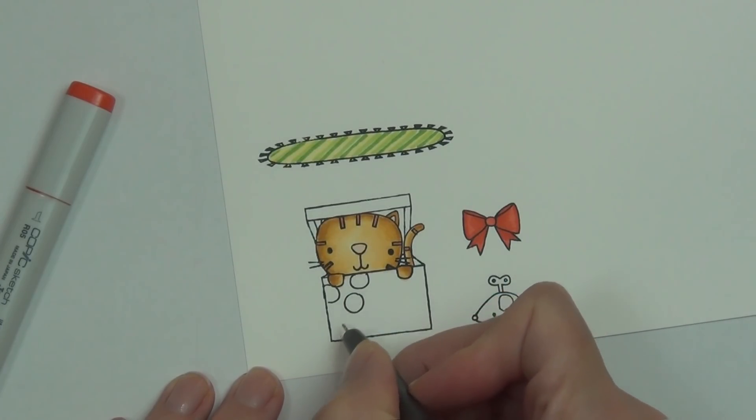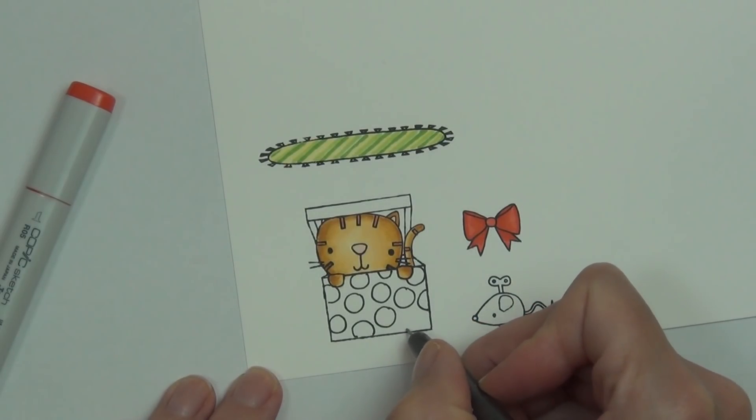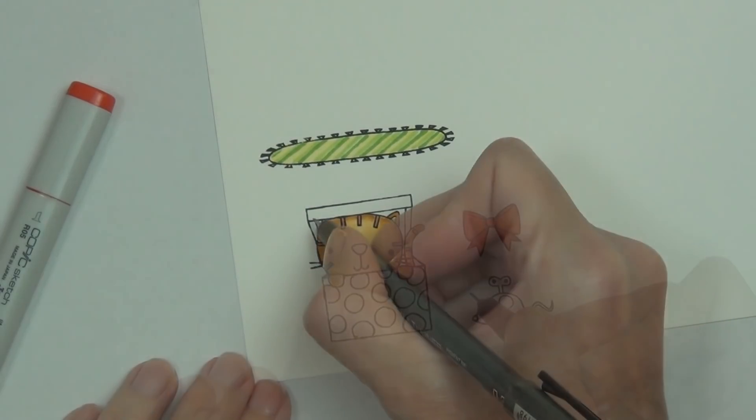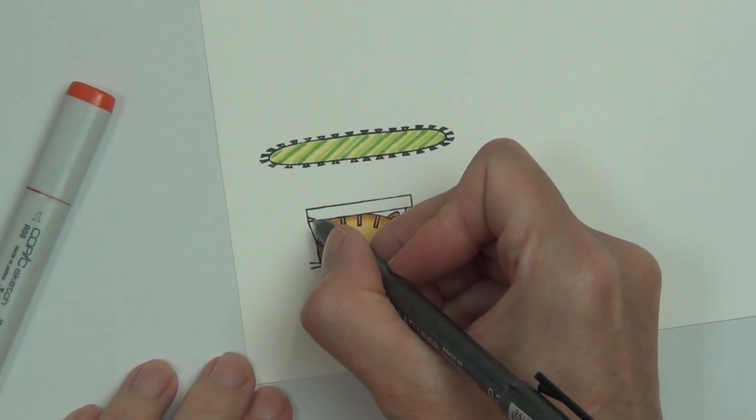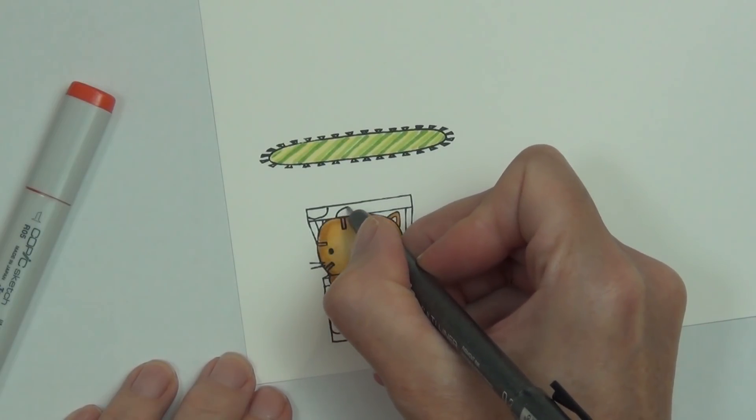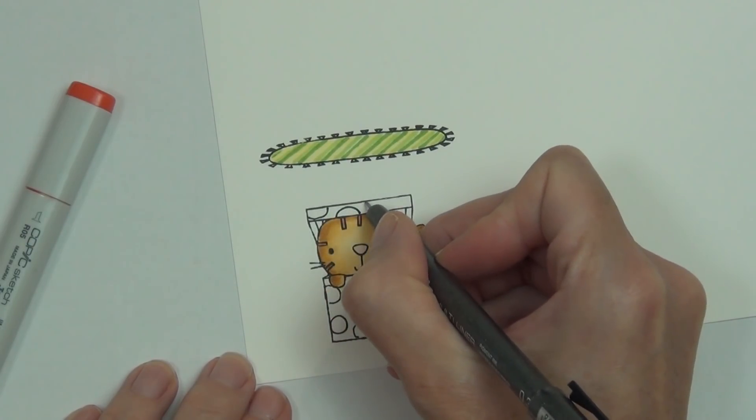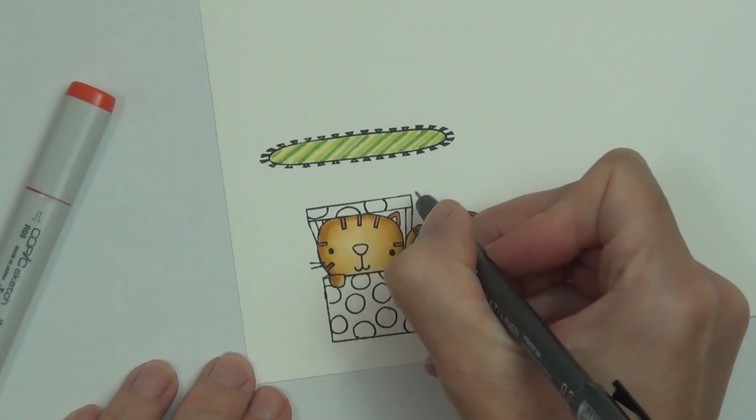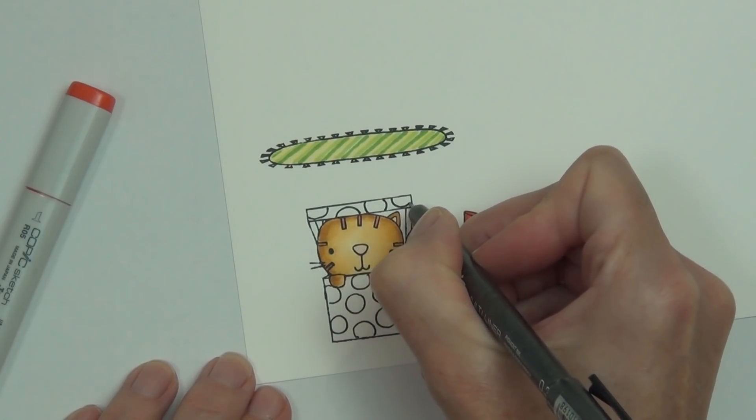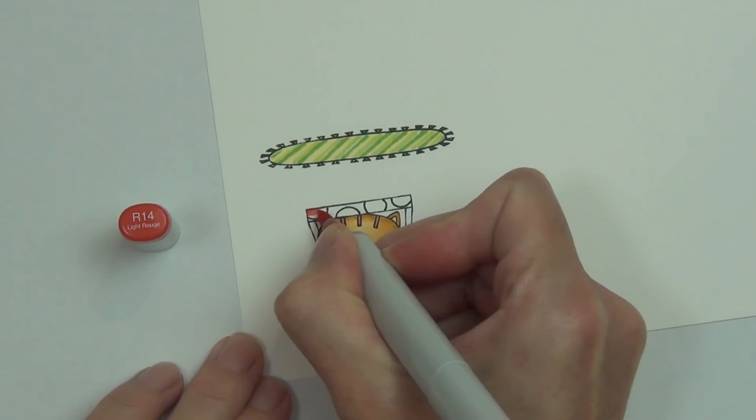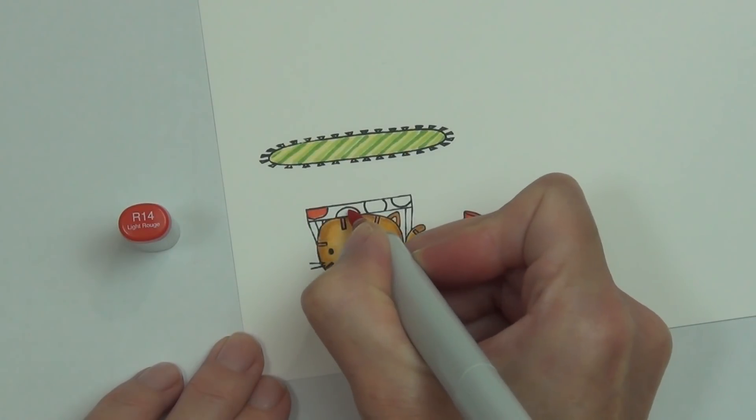What I like to do is look at the thickness of the lines from the stamp and try to match it with the multiliner. I've got the 0.3 millimeter one here, but I also have a 0.1 and a 0.5. Some stamp images have a lot solider outlines, which gives you choices.